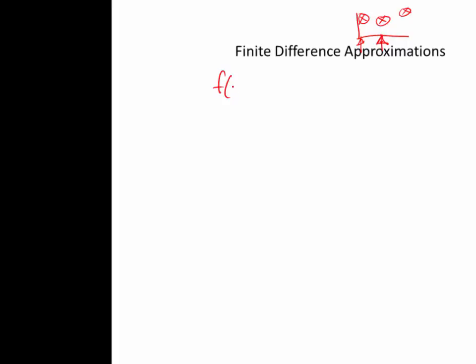That's the forward difference. Now let's do the backwards difference. We want the derivative at that point, and we're going to use that point and the one before it. We write the Taylor series for a minus delta x — so we extrapolate backwards. It's the same expression as before except now delta x is negative, so negative delta x squared is just positive delta x squared.